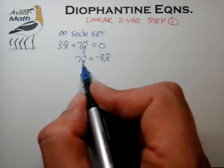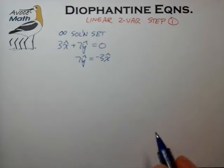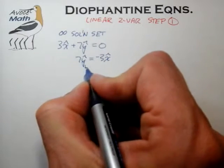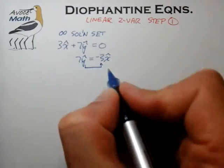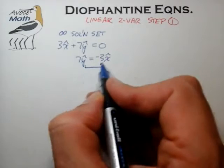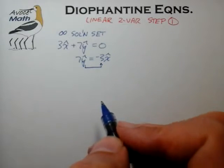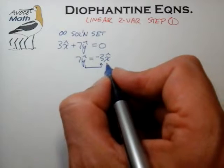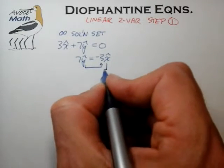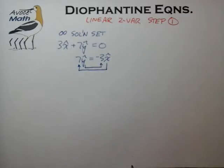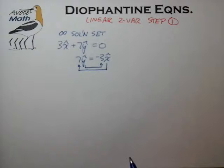We try to match up the integer factors on the left and the right side of this equation. If you stare at this equation, you can quickly come to the conclusion that the y-hat term on the left has to somehow pick up a factor of 3 on the right, and the x-hat term on the left has to somehow pick up a factor of 7.